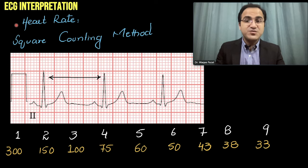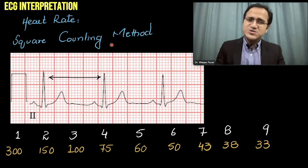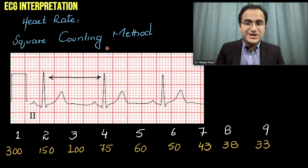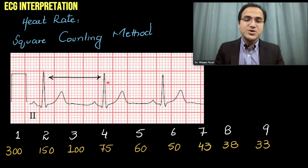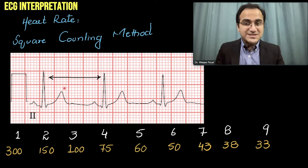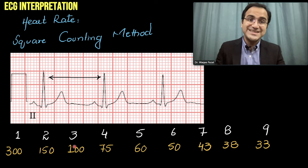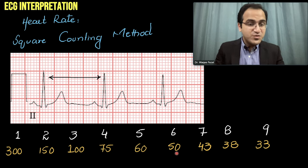For rate determination, the first method is the square counting method — the easiest method. You count the large boxes between QRS complexes. One large box = rate of 300; two large boxes = 150; three = 100; four = 75; continuing: 60, 50, 43, 38, 33, and so on.